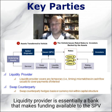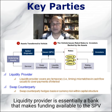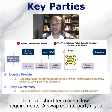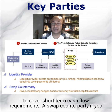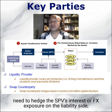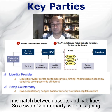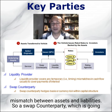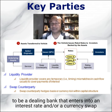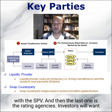A liquidity provider is essentially a bank that makes funding available to the SPV to cover short-term cash flow requirements. A swap counterparty — if you need to hedge the SPV's interest rate or FX exposure, the mismatch between assets and liabilities — is a dealing bank that enters into an interest rate and/or a currency swap with the SPV.